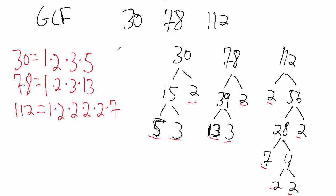Now we're going to look and see what factors these three numbers have in common. They all have the 1 in common, and they all have a factor of 2 in common. But that's actually it — 30 and 78 have a factor of 3 in common, but 112 does not. 112 has three more factors of 2, but 30 and 78 no longer have any more factors of 2. 30 has a factor of 5, but 78 and 112 do not. 78 has a factor of 13, but 30 and 112 do not.